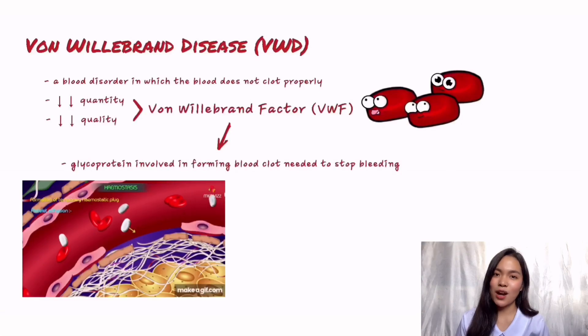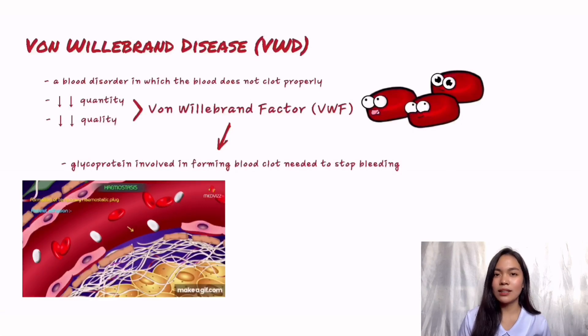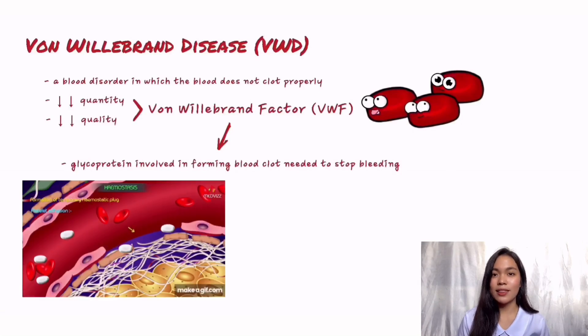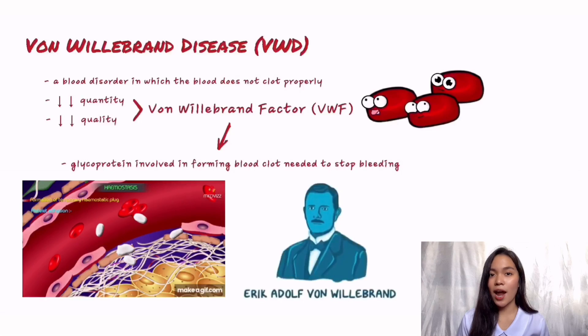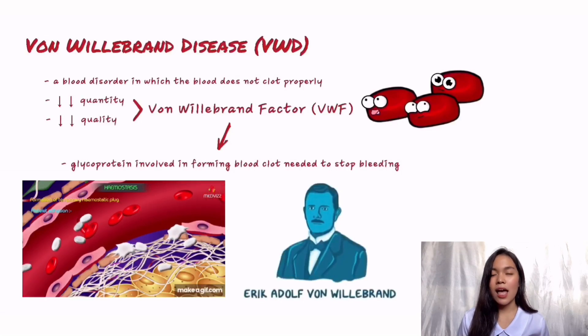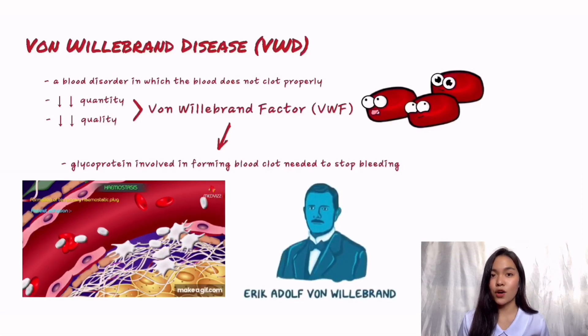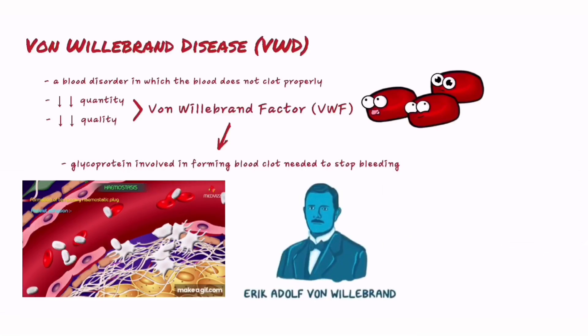It was first described in the medical literature in 1926 by Dr. Eric Adolf von Willebrand, a Finnish physician who differentiated the disorder from classic hemophilia.